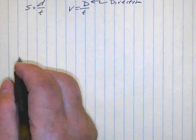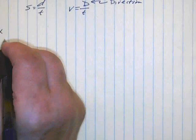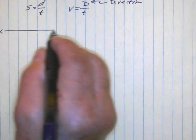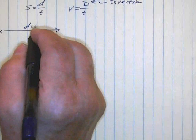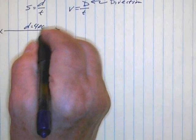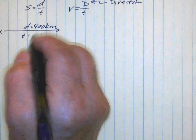Let's look at it another way. Let's suppose we start at point X and we drive a distance of 400 kilometers in a time of eight hours.